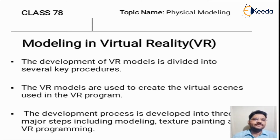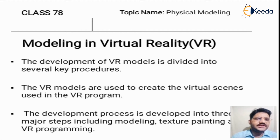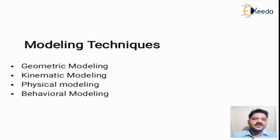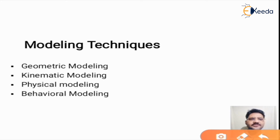As we know, the development of virtual reality models can be divided based on several key procedures. These models are used to create virtual scenes or images with the help of virtual reality programs. This process can be classified in three stages, which include modeling, texture painting, and virtual reality programming. Out of these modeling techniques, here we are discussing about physical modeling.